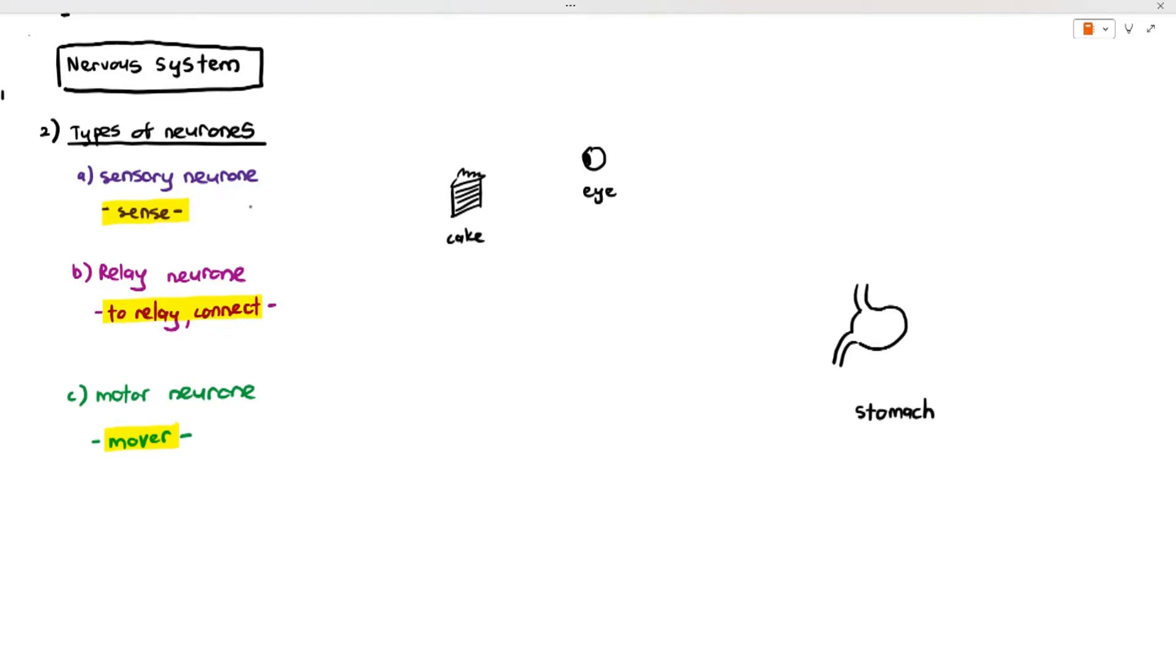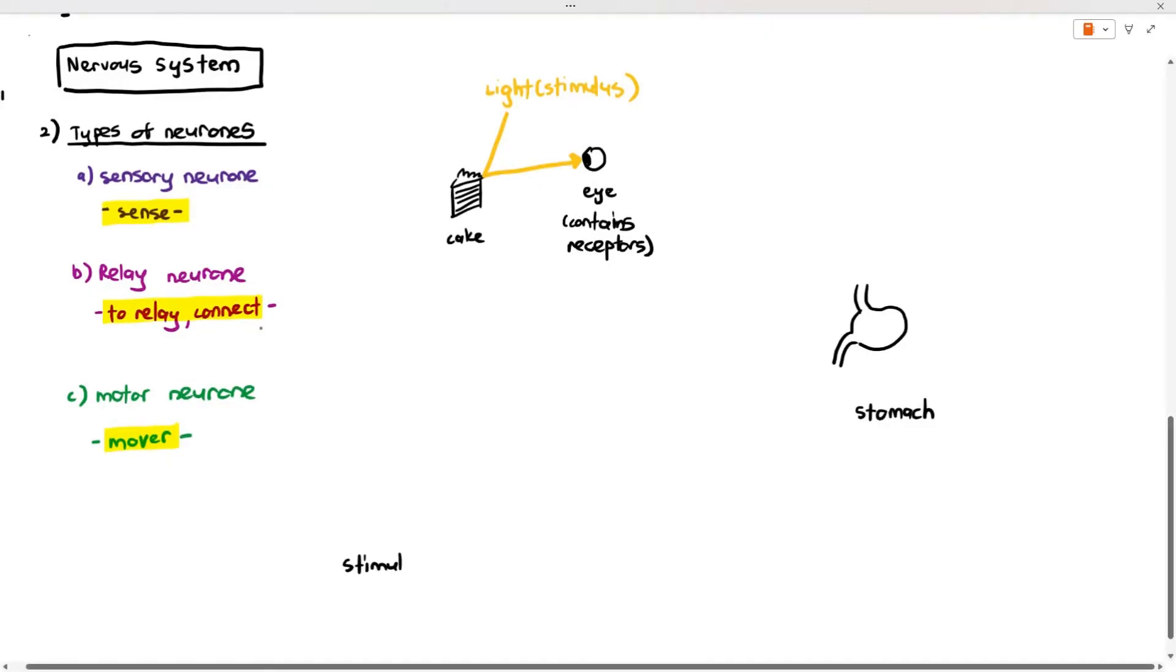To understand exactly what these neurons are doing, we must go back to the example that I was talking about in the first video, where you look at a piece of cake with your eyes, and then your stomach will start to rumble and produce gastric juice. What's normally supposed to happen is light hits the cake, and the light from the cake gets reflected into your eyes. Your eyes have these structures known as photoreceptors, or just receptors. These receptors are supposed to detect the stimulus. In this case, they detect light.